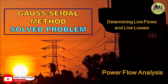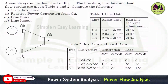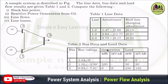Power flow analysis using Gauss-Seidel method, problem number 3: we are going to determine the line flows and line losses. A sample system is described in a figure; the line data, bus data, and load flow results are given in tables 1 and 2. We need to compute: the slack bus power, reactive power generation from generator 2, line flows, and line losses. The line admittance values and half-line charging admittances are given.